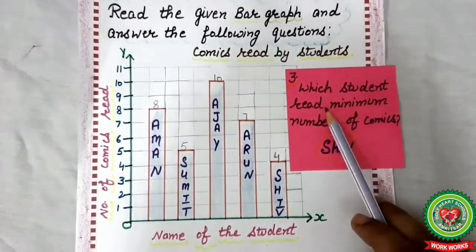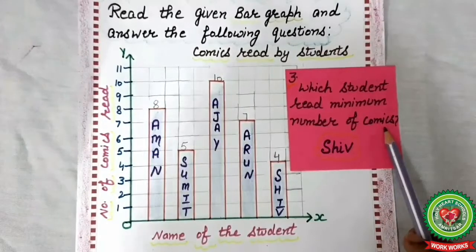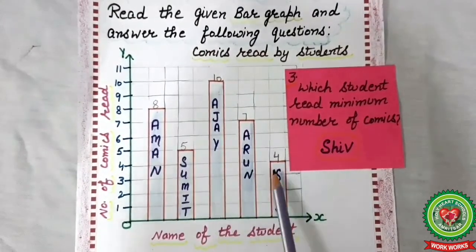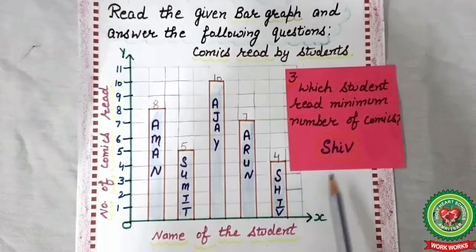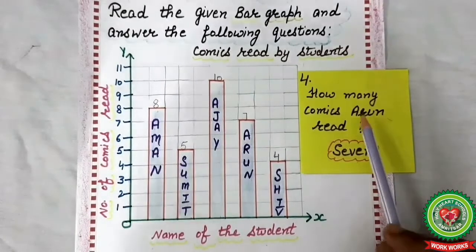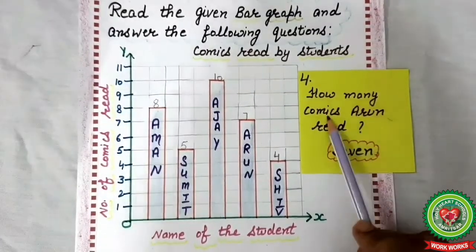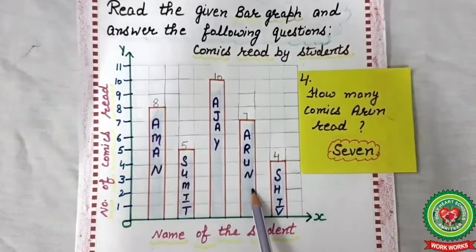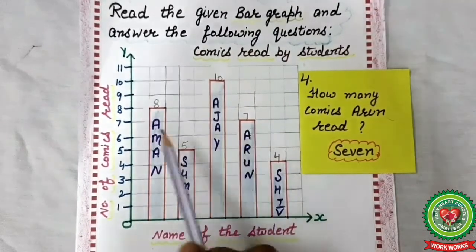Question third: which student read minimum number of comics? Which student has read the least number of comics? Four comics is Shiv, so the answer is Shiv. Now question four: how many comics did Arun read? Arun read seven comics, so the answer is seven.